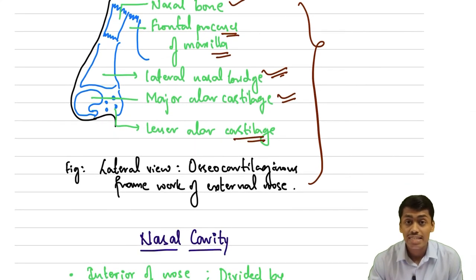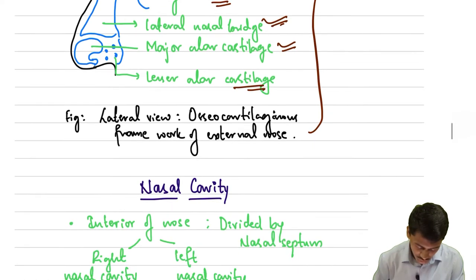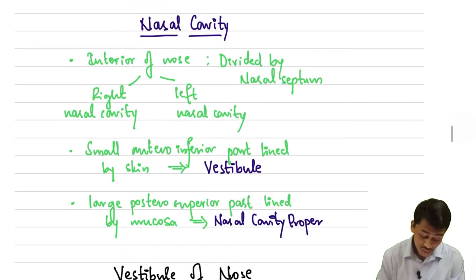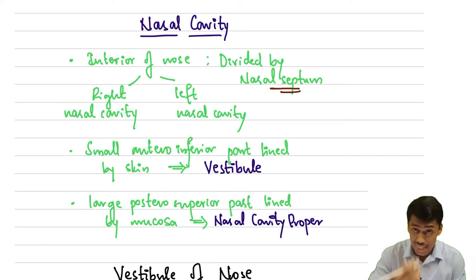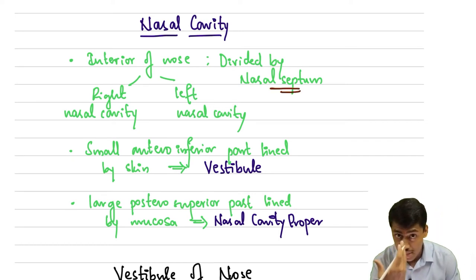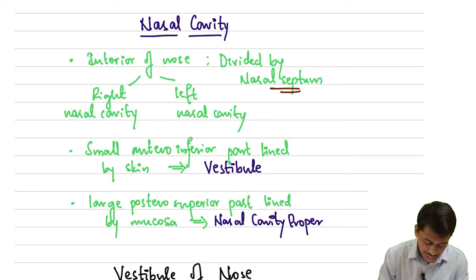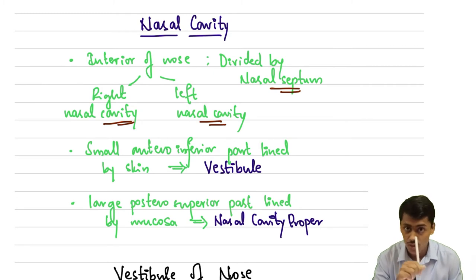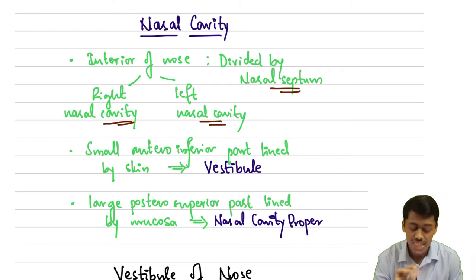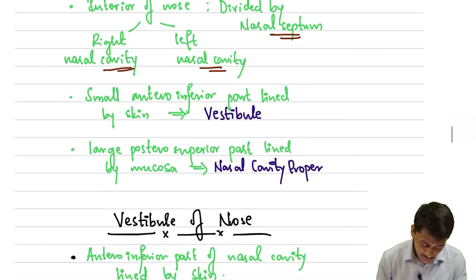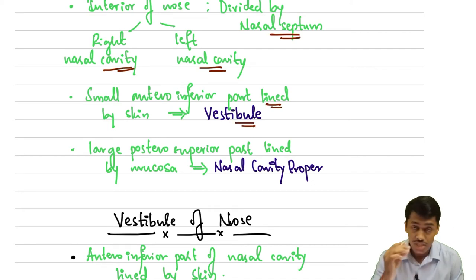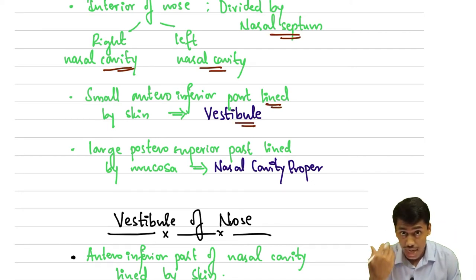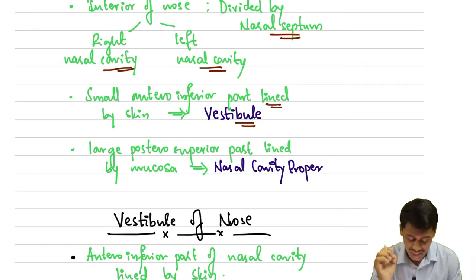Now let's move on to the nasal cavity — what is on the inside? The interior of the nose is divided by a median nasal septum into the right nasal cavity and the left nasal cavity. There is also a small anterior inferior part lined by skin, called the vestibule.